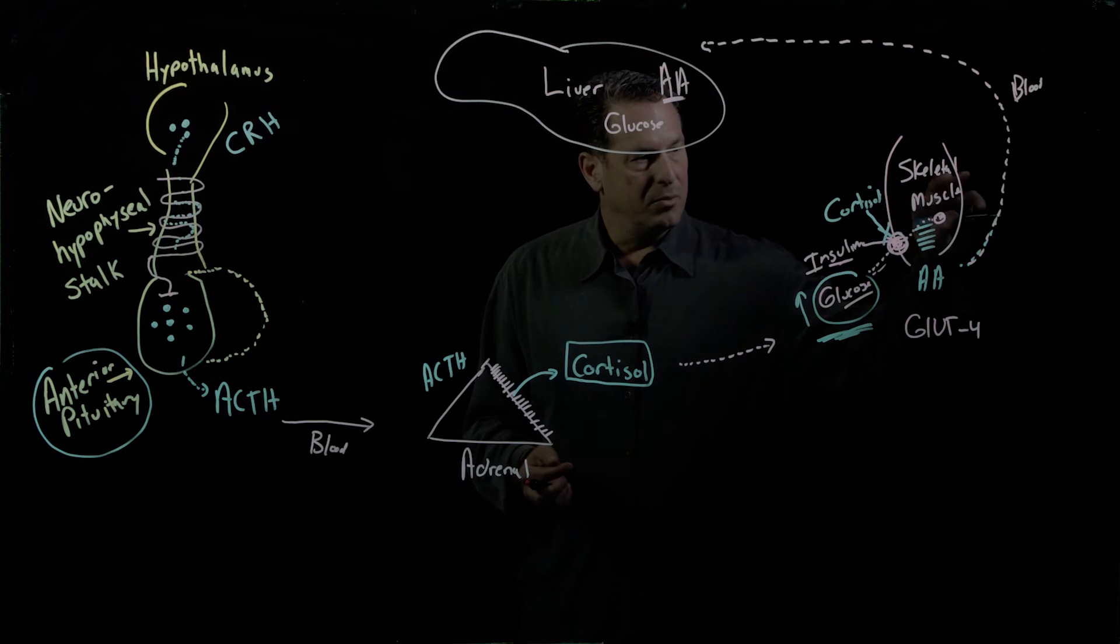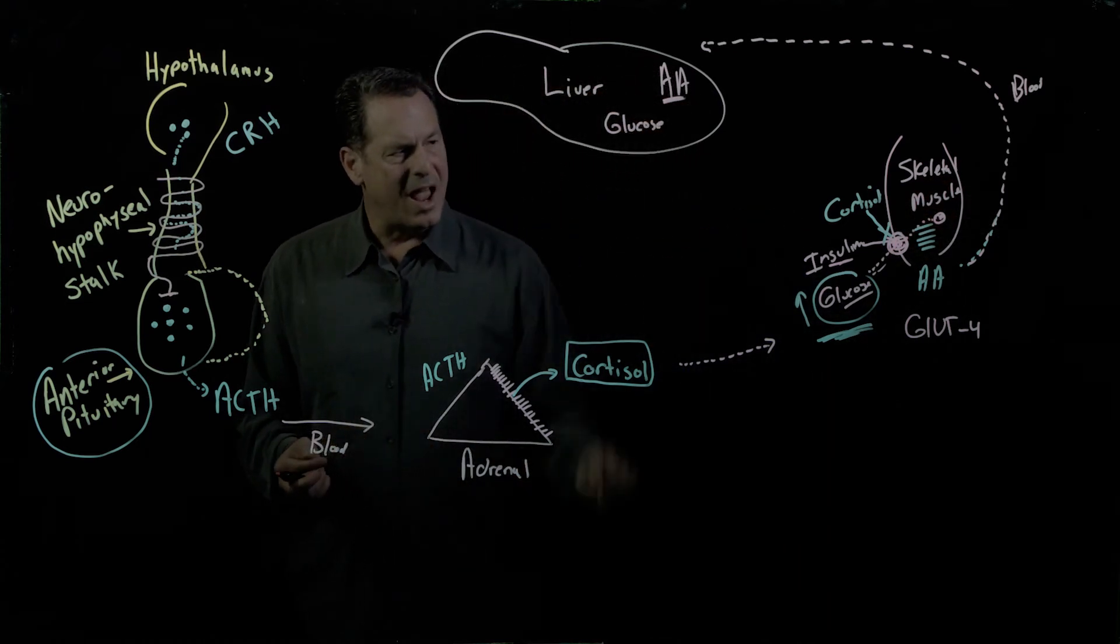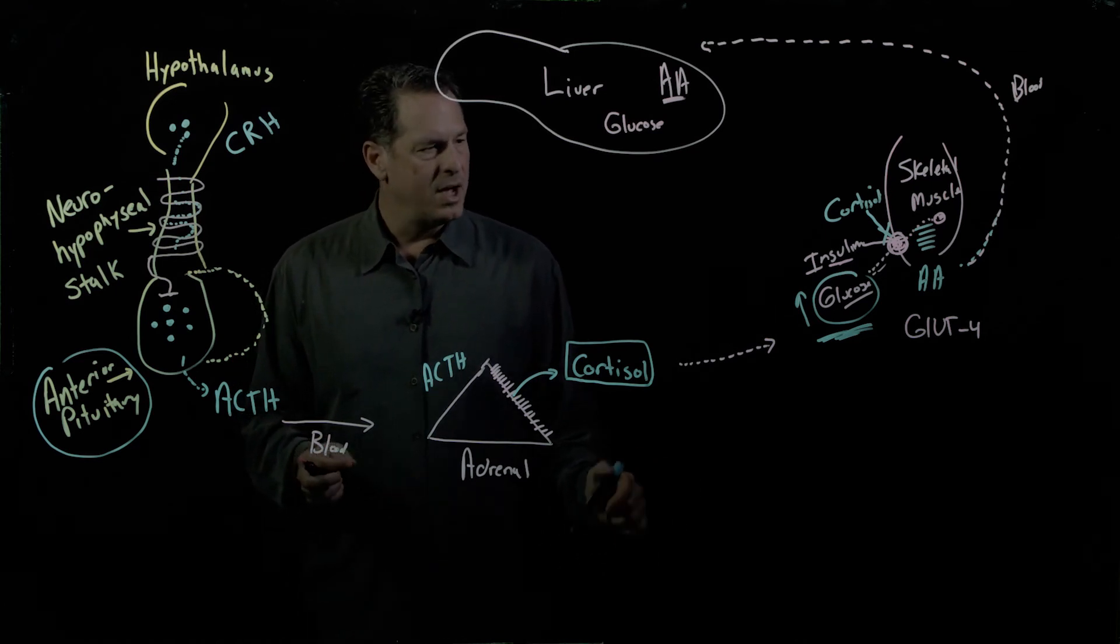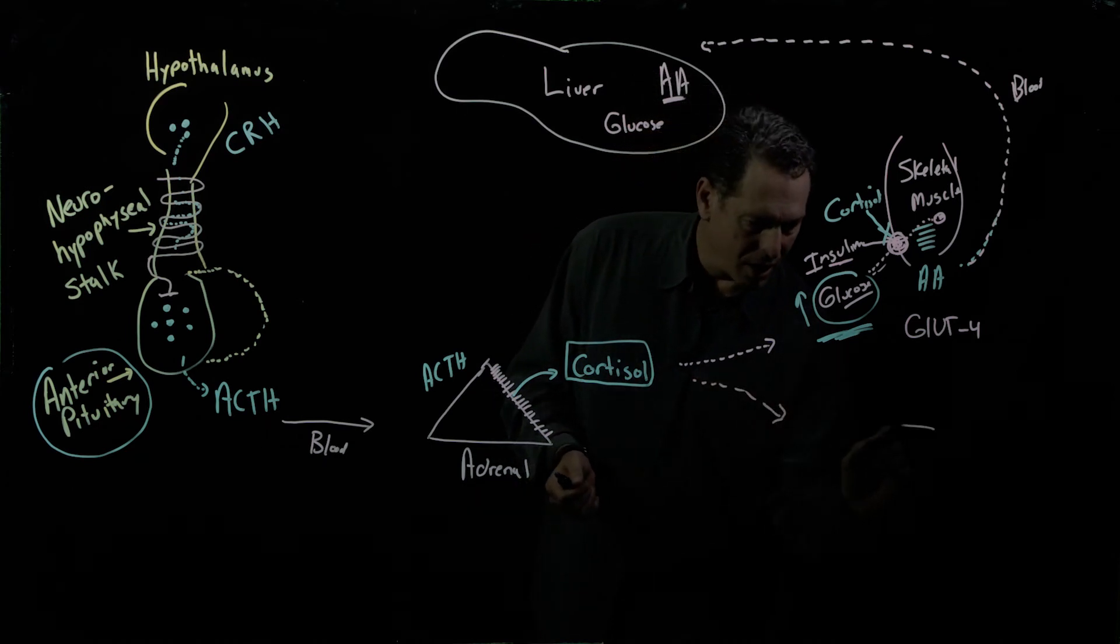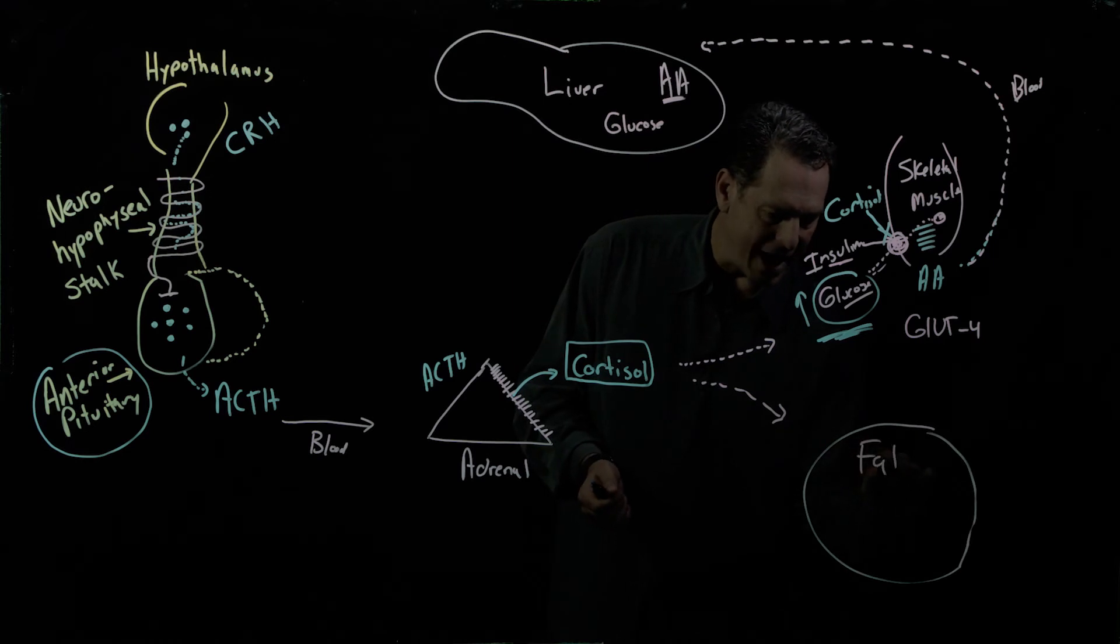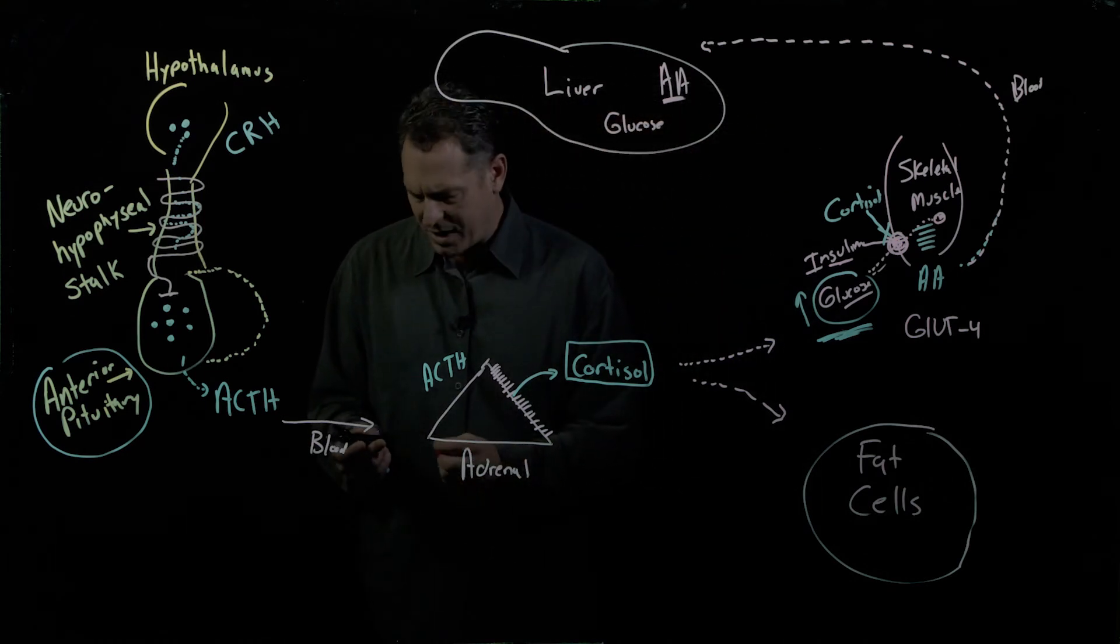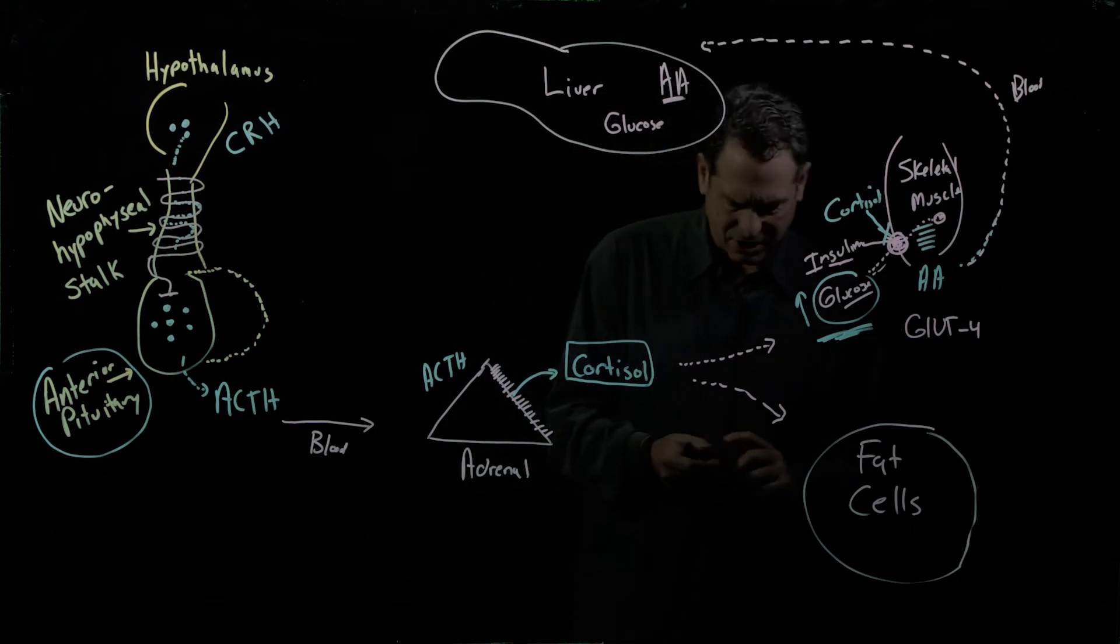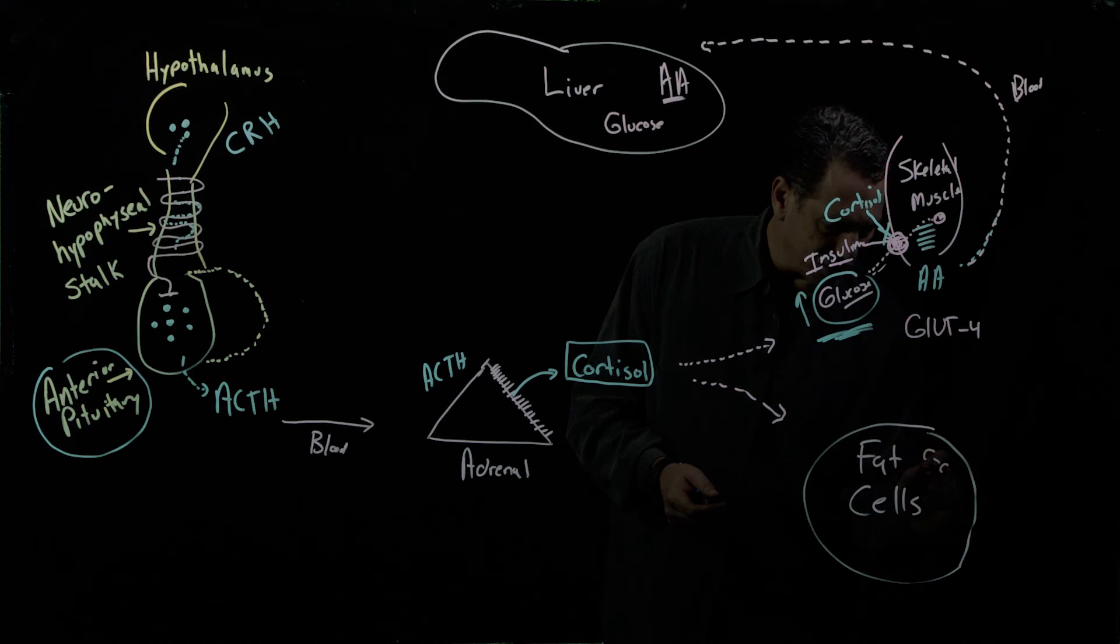So breaking down skeletal muscle, impairing glucose uptake at the skeletal muscle, very important. Another place that cortisol goes are to fat cells. Fat cells are called adipocytes.